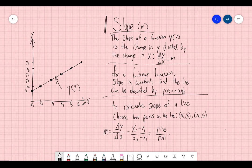So for a linear function, like a line, slope is constant, and the line can be described by y of x equals mx plus b. So if we find m and b, we can characterize any line.